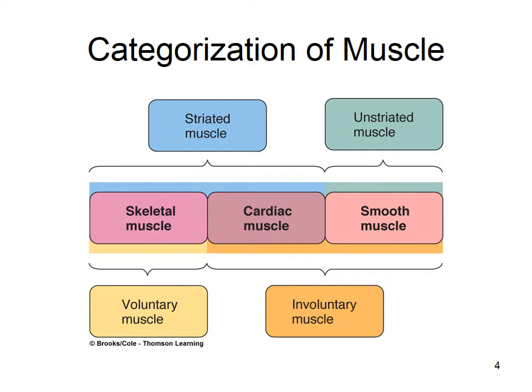We can categorize muscle into striated versus unstriated. Skeletal and cardiac muscle are striated, meaning they have sarcomeres. Smooth muscle is unstriated — not arranged in sarcomeres. Voluntary means conscious control; involuntary means we do not have conscious control.